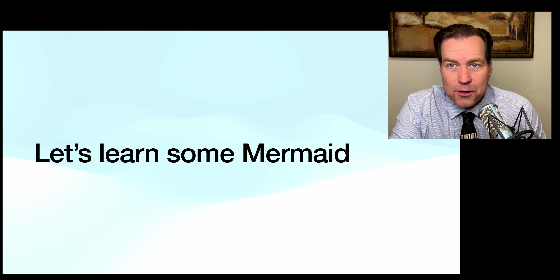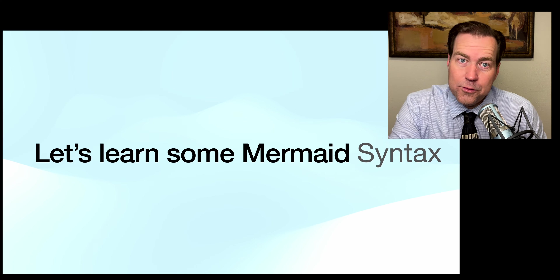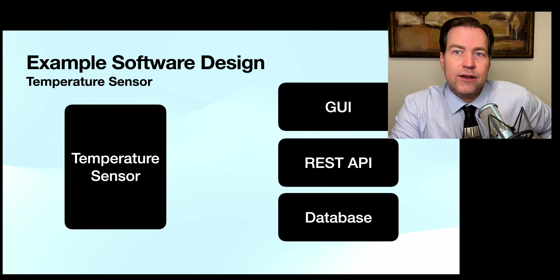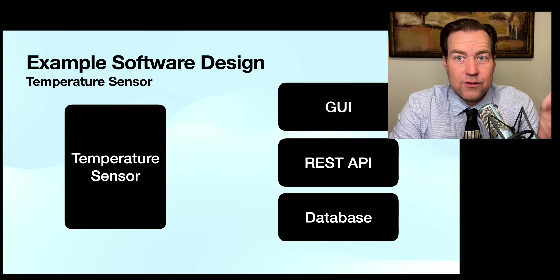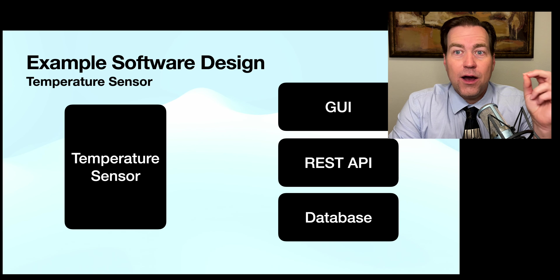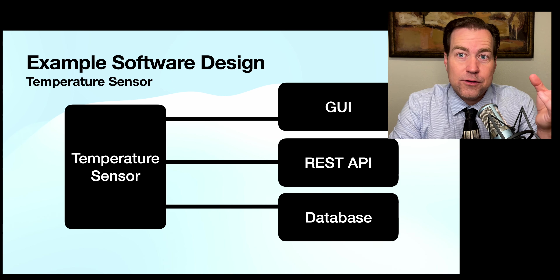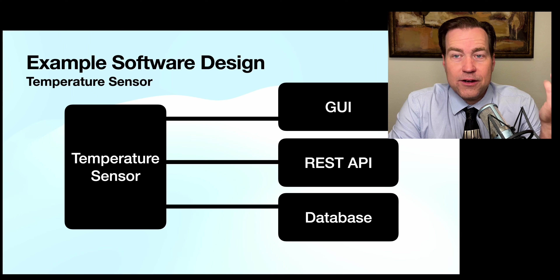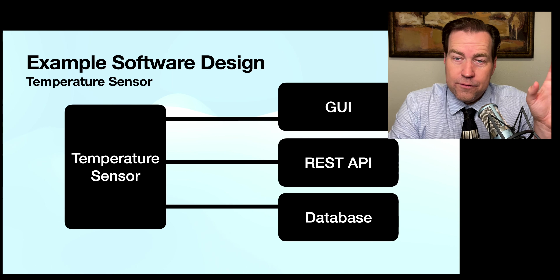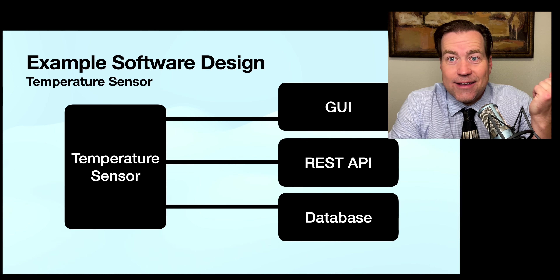Let's dive in to learning a little about Mermaid and the syntax it uses to create diagrams from code. Let's create an example: say we're writing a software system that has a real-world sensor that calculates temperature, connected to a REST interface, a backend database, and a graphical user display — one sensor with three connections. We're going to write the code for the system that takes that data and moves it to the other portions of the software. UML class diagrams are great for representing object-oriented design, so we'll start there.